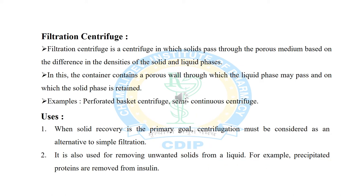Filtration centrifuge is another type of centrifuge where the solid phase passes through a porous medium based on the difference in densities of the solid and liquid phases. The container has a porous wall through which the liquid phase may pass while the solid phase is retained. Examples include the perforated basket centrifuge and semi-continuous centrifuge.